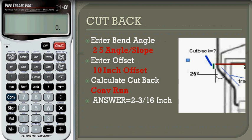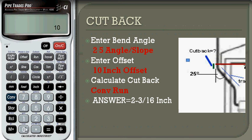To find cut back, enter the bend angle: 25 degrees. Press the angle or slope button — it stores the bend angle. Then enter 10, press inch, and press offset — it stores this value. To find cut back directly, press CO and the run button. The cut back is 2 and 3/16 inches.